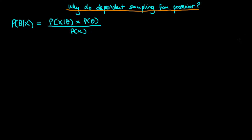In this video I want to explain why we use dependent sampling to sample from the posterior. On the left hand side here I have Bayes' rule, and remember that on the right hand side of this equation, in the denominator, we have a term which is often called the marginal likelihood, which we just cannot usually calculate. Because we cannot calculate that, we have turned towards using sampling as a way of understanding what the posterior looks like.